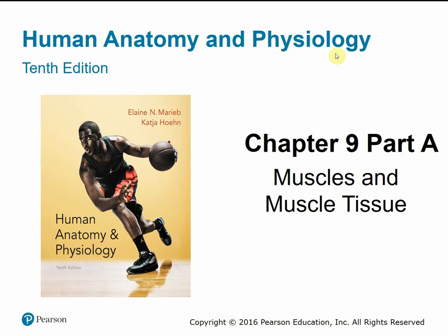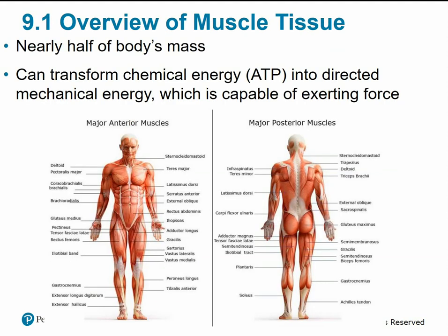This is chapter 9, part A on muscles and muscle tissue. Muscle tissue makes up nearly half of our body's mass — it's a very dense tissue. Remember from the tissues chapter, we said it was unique in that it can transform chemical energy in the form of ATP into directed mechanical energy capable of exerting force and providing movement.